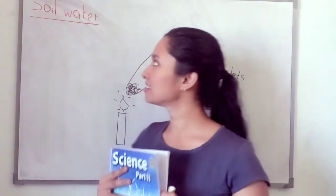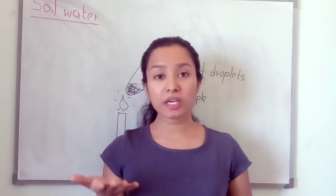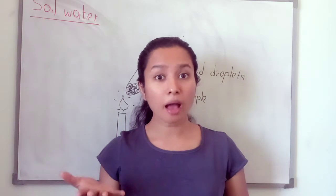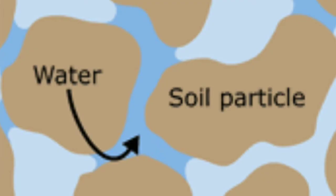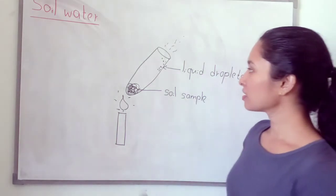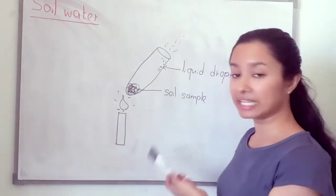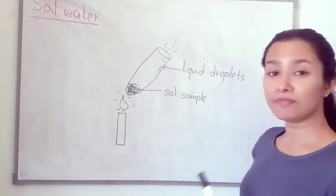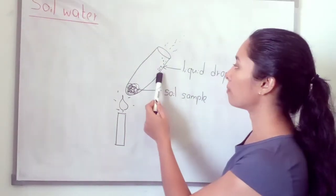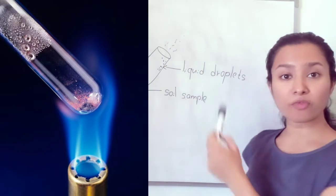Another component of soil is soil water. When we take a soil sample from the ground, we can feel it is dry, but there is water in the soil sample. To identify whether there is water, we can take a soil sample and put it into a test tube. Using a Bunsen burner, we can heat the soil sample. While heating, we can observe that liquid droplets deposit on the wall of the test tube.